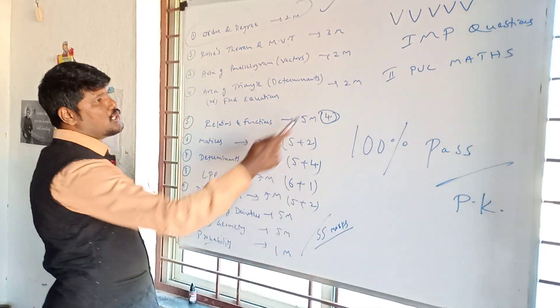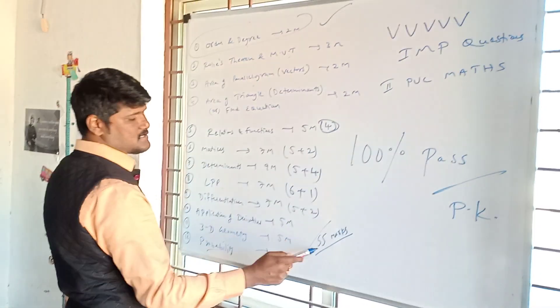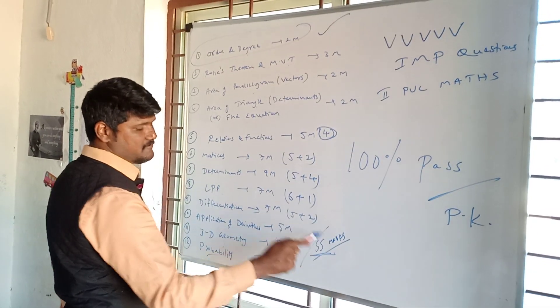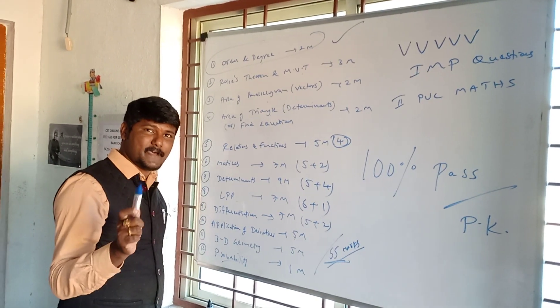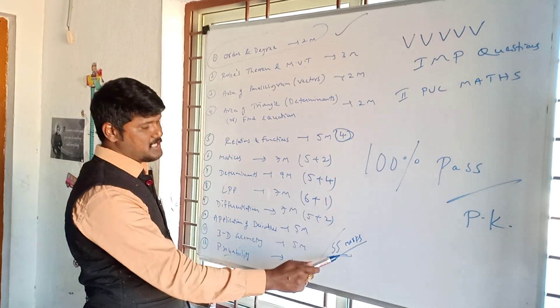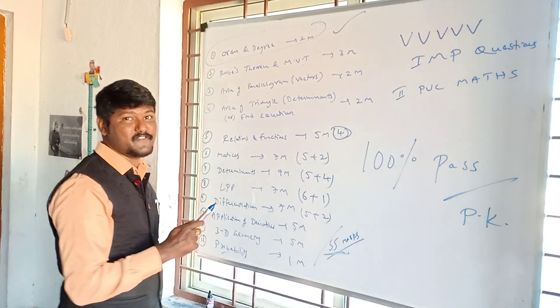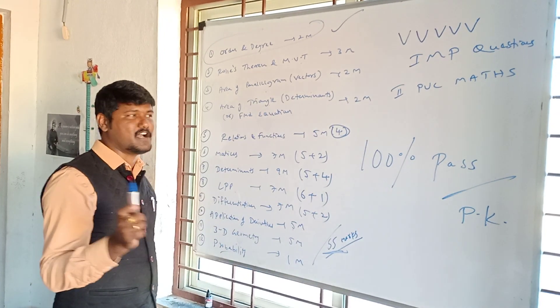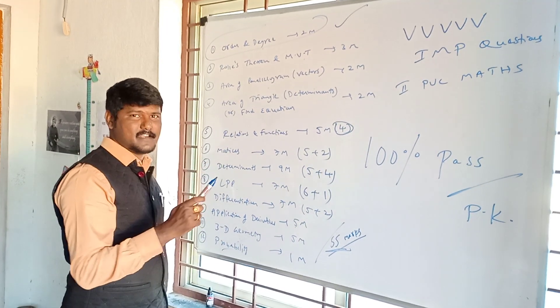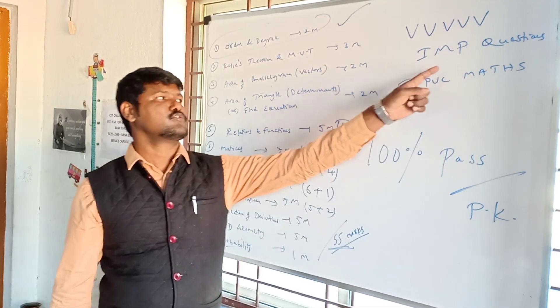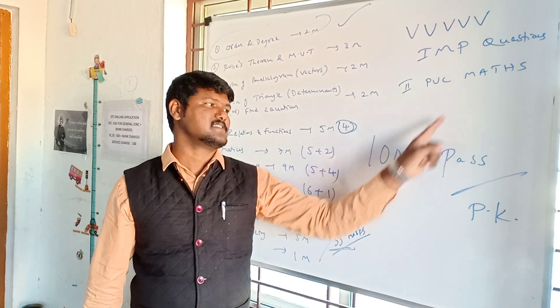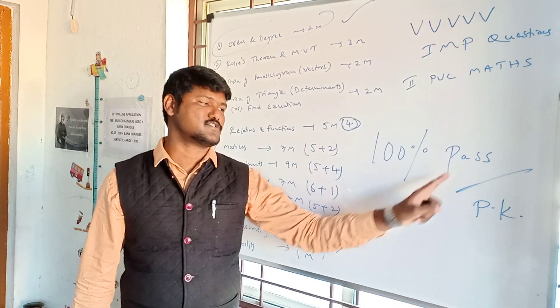All together, how many marks? 55 marks. 100% pass — it's more than the pass percentage. 55 marks out of 100. These are very, very, very important questions. 2nd PUC Maths, 100% pass.